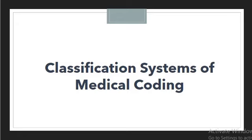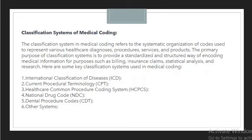We will start with a basic definition of the classification system, then cover the basic terminology used for these systems. A classification system in medical coding refers to a systematic organization of codes used to represent various healthcare diagnoses, procedures, services, and products. As a medical coder, you need a system where you can find organized, systematic codes to use for mapping medical terminology.